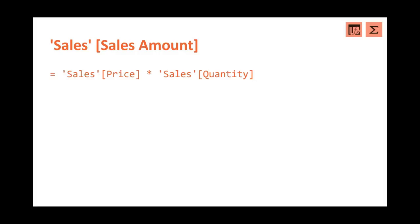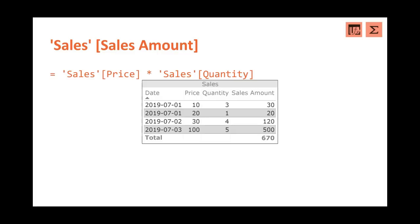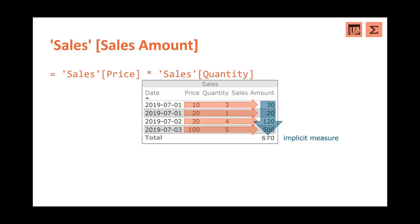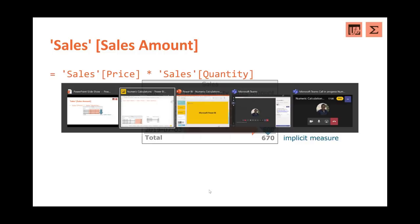Let's start with our first calculated column — very simple: sales amount. The sales amount is calculated by multiplying price times sales quantity. For our sample table with four entries: price 10, quantity 3 gives 30; 20 times 1 is 20; 30 times 4 is 120; 100 times 5 is 500. Then we have a total of 670. This is calculated by the implicit measure: if the default summarization is set to 'sum,' it sums up 30 + 20 + 120 + 500 = 670.